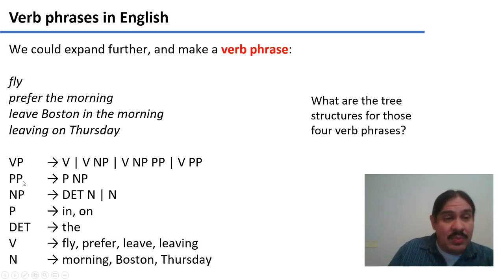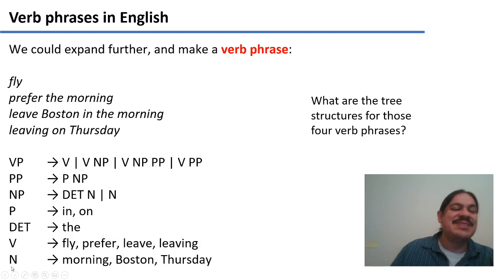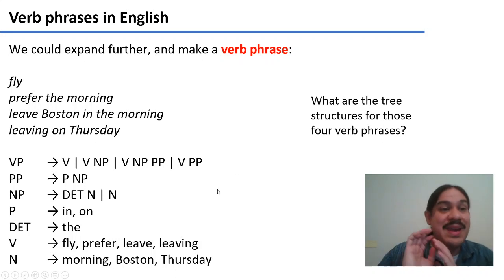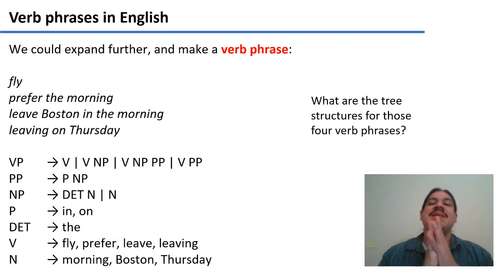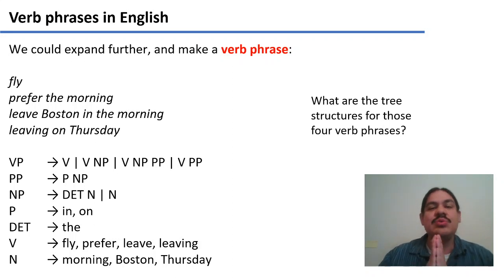We have the same rules as before: a prepositional phrase is a preposition and a noun phrase; a noun phrase is a determiner and a noun, or just a noun. The abstract preposition goes to 'in' and 'on.' The determiner non-terminal goes to 'the.' The verb non-terminal goes to 'fly,' 'prefer,' 'leave,' 'leaving.' The non-terminal noun goes to 'morning,' 'Boston,' 'Thursday.' Please take out a piece of paper and try to draw the tree structures for these four verb phrases using the rules we have here. Pause the video.